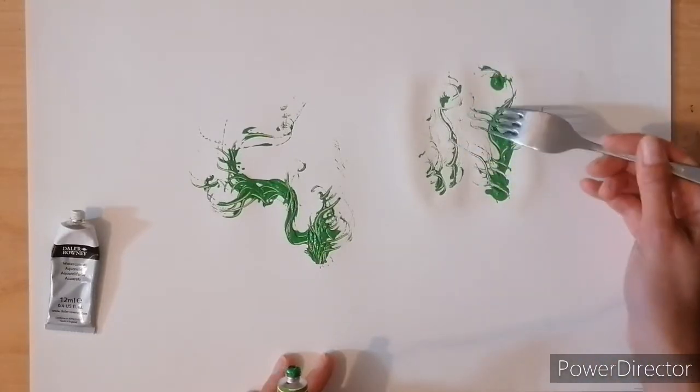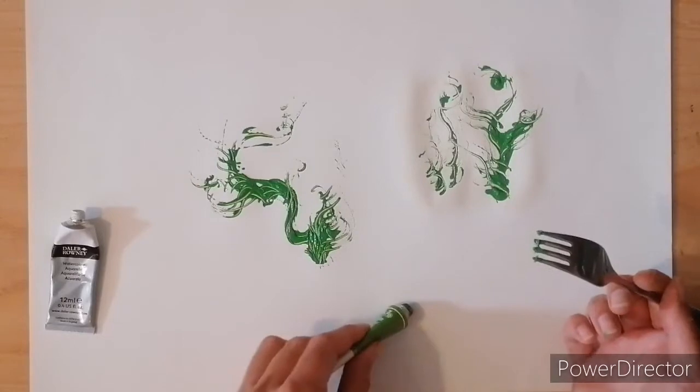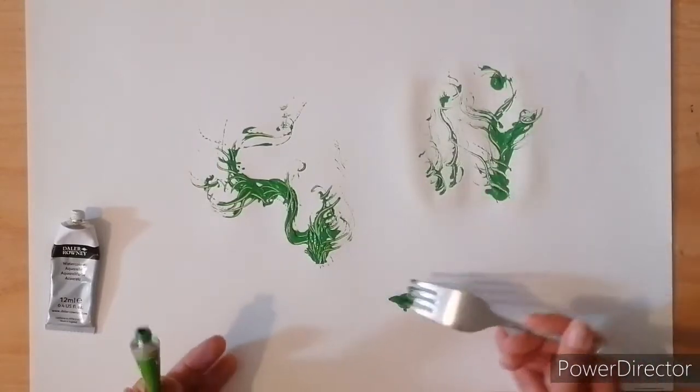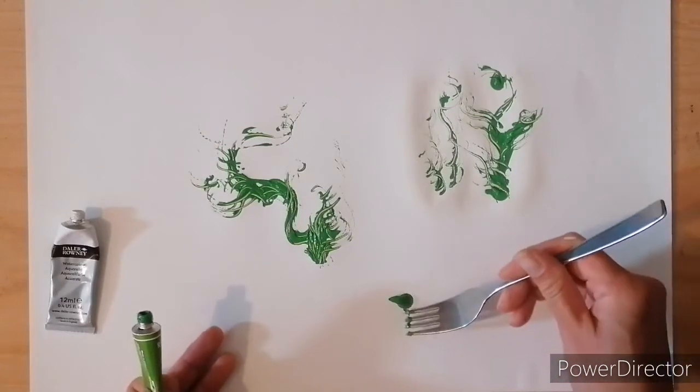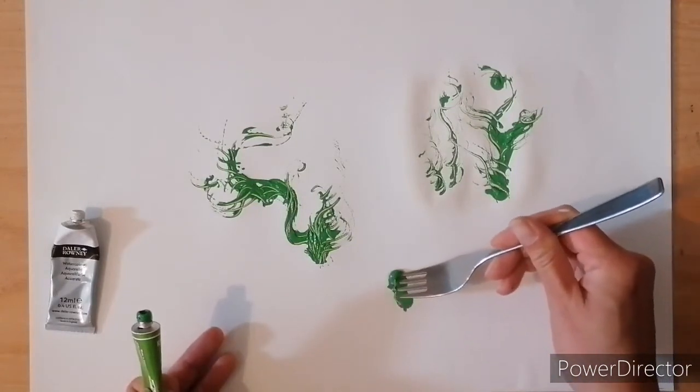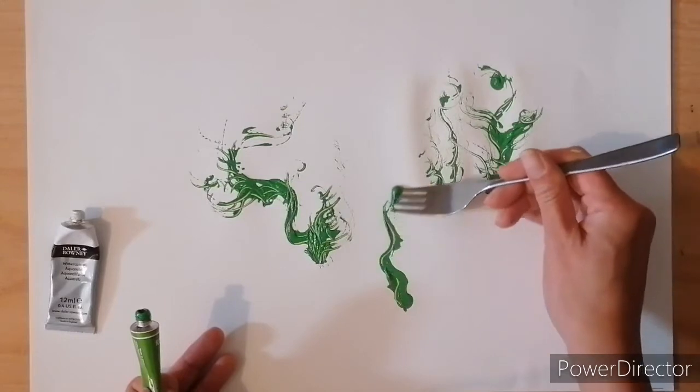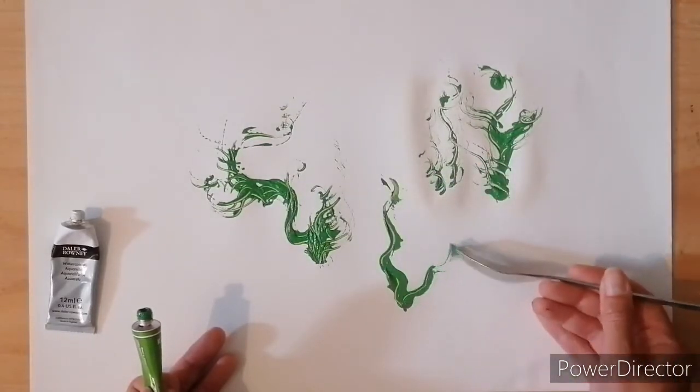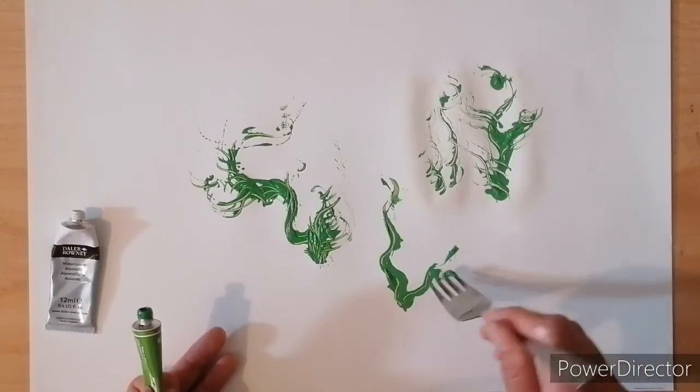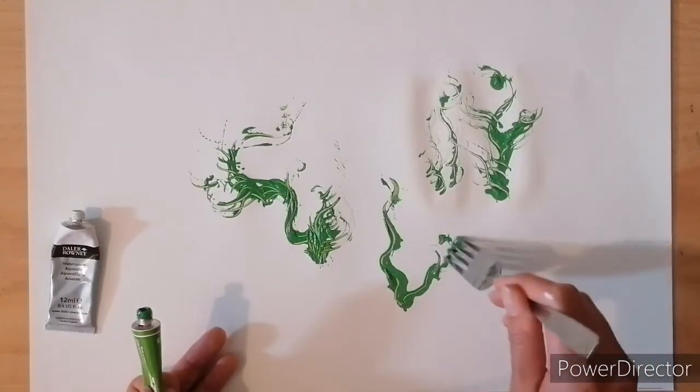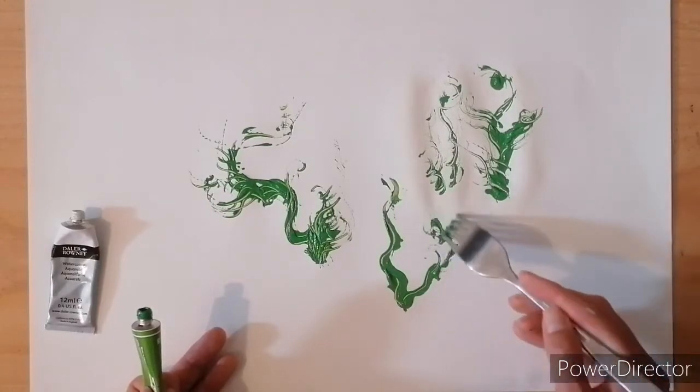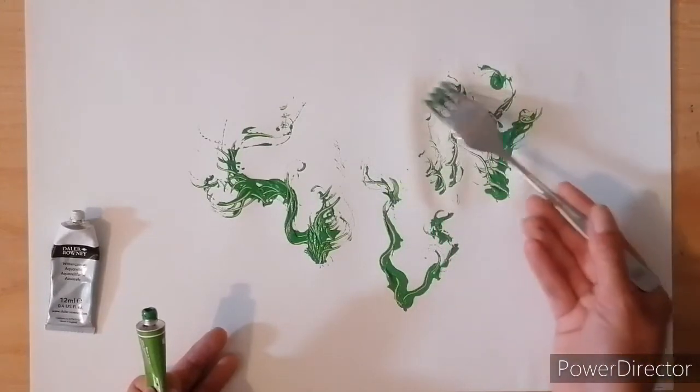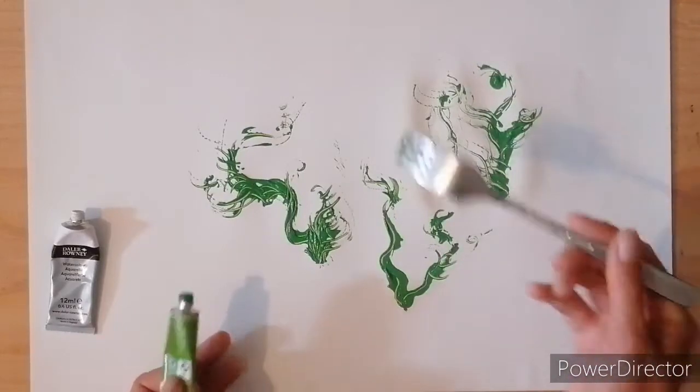I think my favourite thing about this technique is where you're starting from a central point of the stem or down the bottom where the roots are, and you're pushing the paint slowly, deliberately, sort of where it wants to go really. The path of least resistance. It feels very organic and very much like a plant growing at the same time. You can kind of get that feeling yourself of growth and extension. There we go.